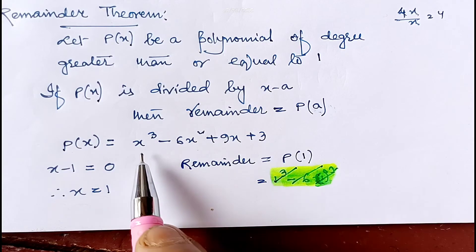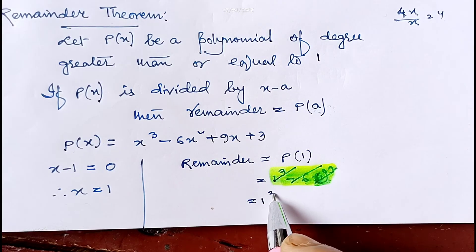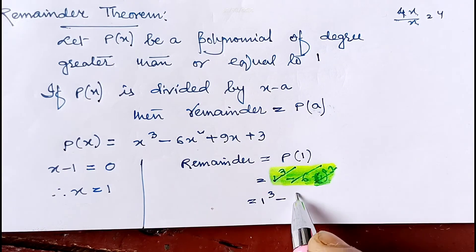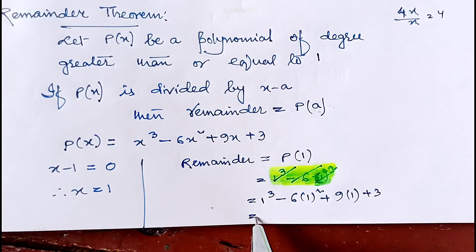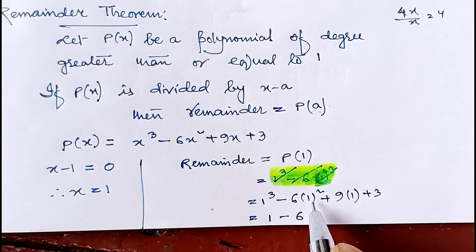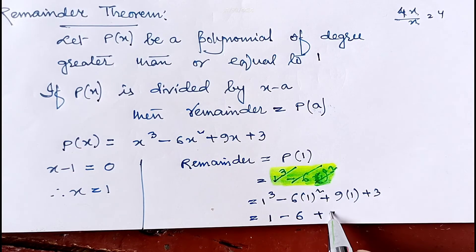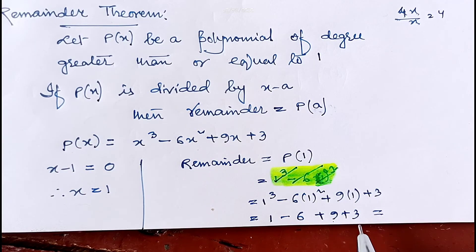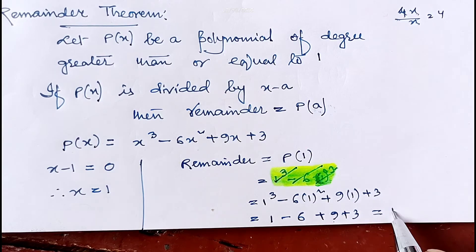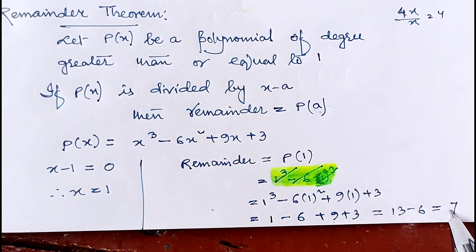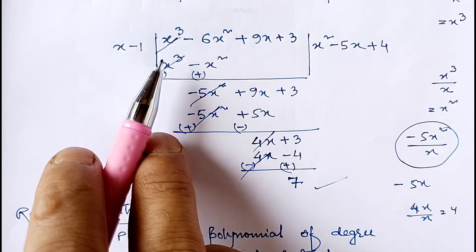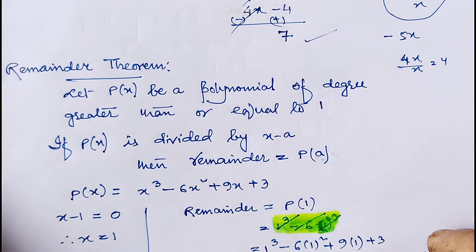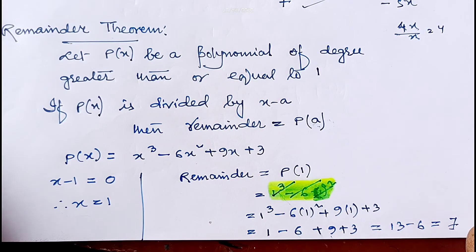By using the remainder theorem, the remainder will be p(1). So we replace x by 1: it will be 1³ - 6 × 1² + 9 × 1 + 3, which gives 1 - 6 + 9 + 3 = 13 - 6 = 7. Using this theorem we very simply got remainder 7, the same as with the long division method.